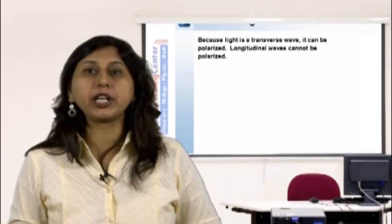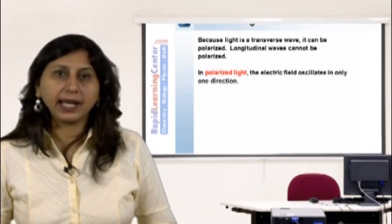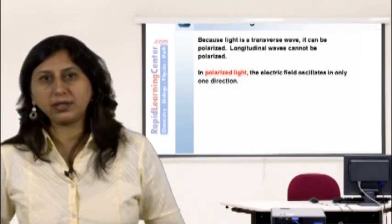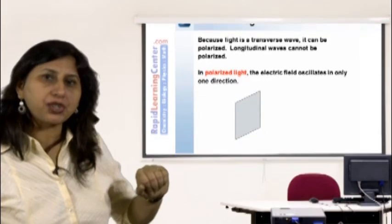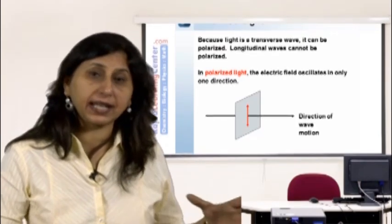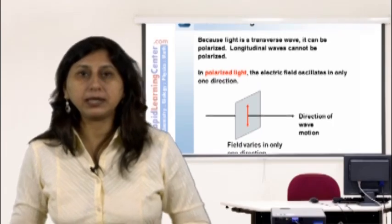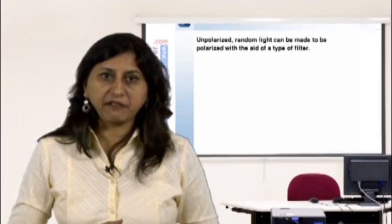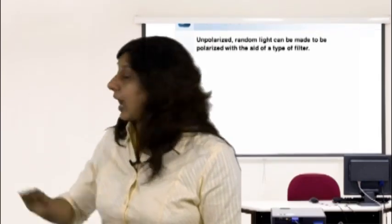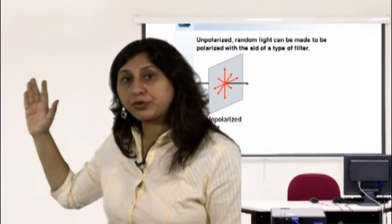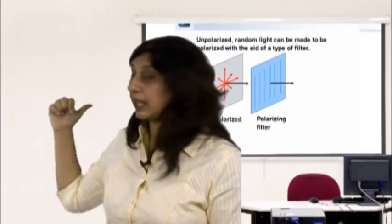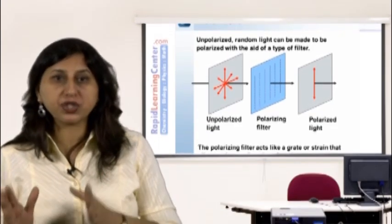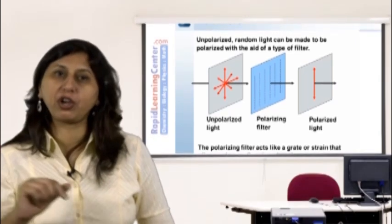Polarized light: because light is a transverse wave it can be polarized; longitudinal waves cannot. In polarized light the electric field oscillates in only one direction relative to the direction of wave motion. Unpolarized random light can be made polarized with a polarizing filter. Passing unpolarized light through such a filter produces polarized light — the filter acts like a grate that allows only one direction of motion.